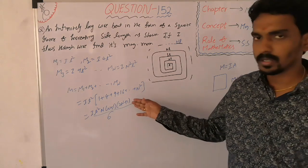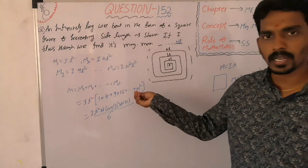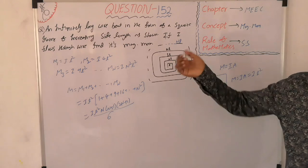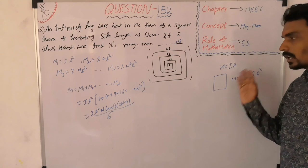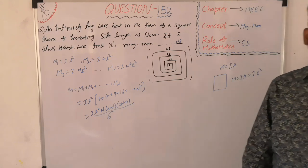This is how you can understand the simple concept of magnetic moment of a current carrying loop, where magnetic moment equals current into area. Thank you.